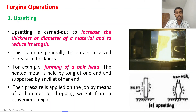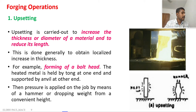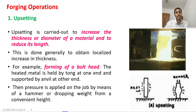Good day. Welcome to the eleventh lecture on metal forming. In the last class we discussed the introduction of the forging process. In metal forming, forging is an important process commonly used in industries for producing varieties of products. We discussed the forging operation, which can be classified into three types: open die forging, closed die forging, and semi-impression die forging.